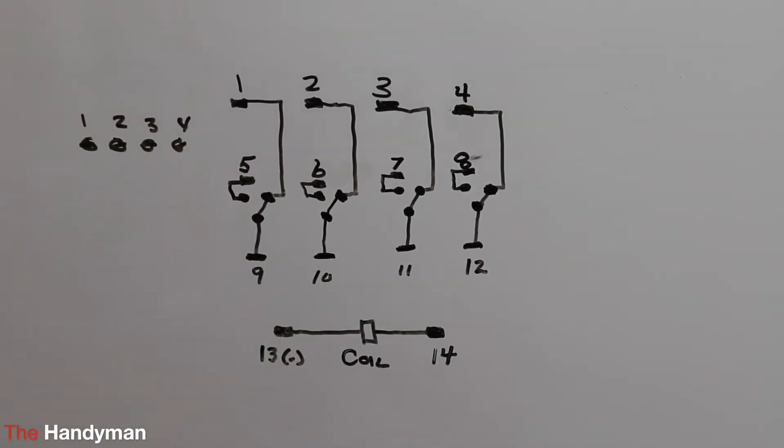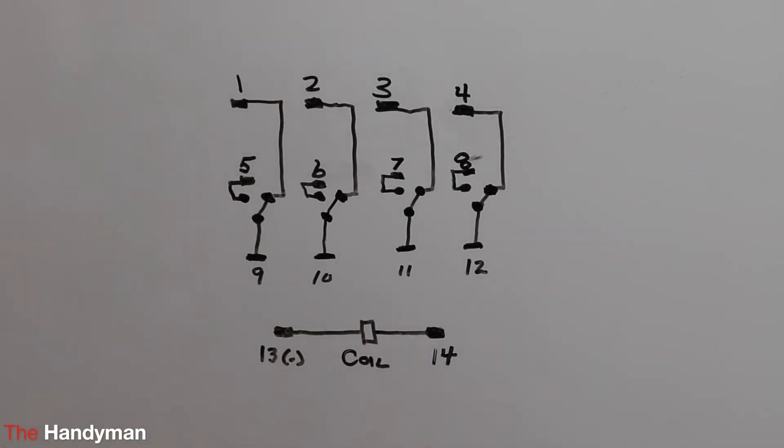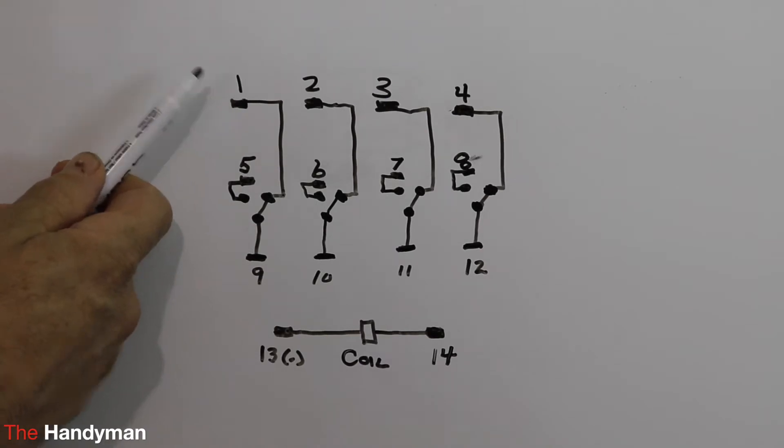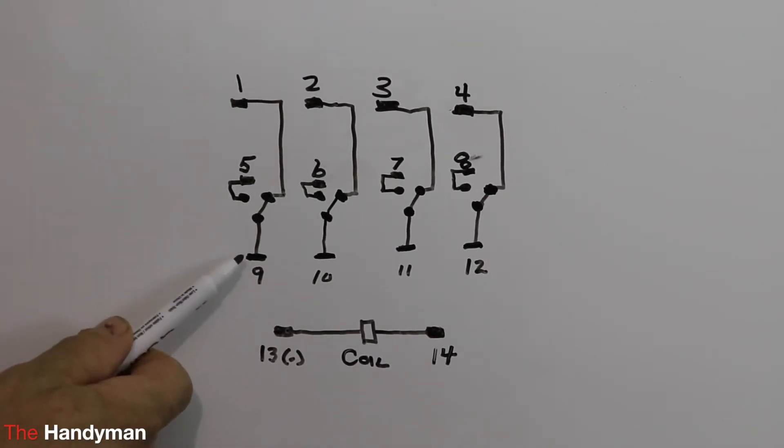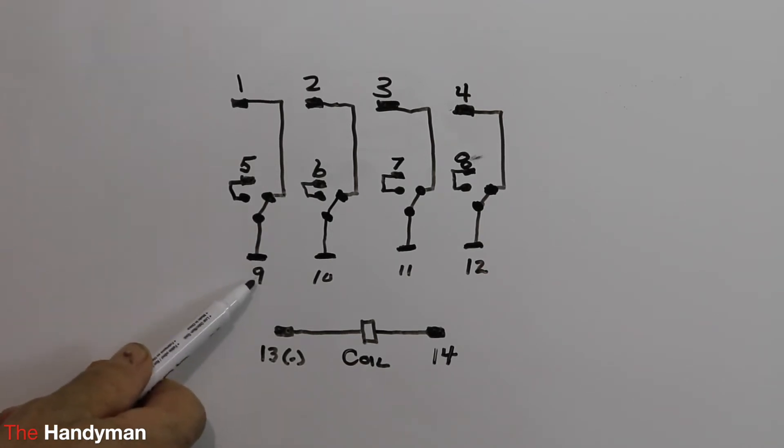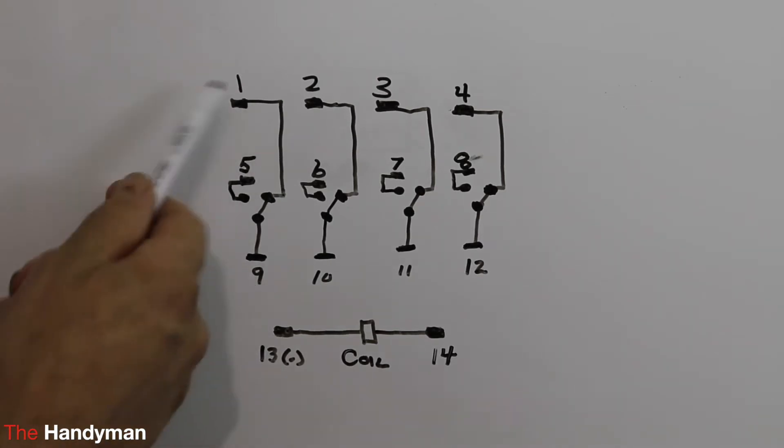So getting back to this, your first set of contacts is screw terminal number one, and to find a normally closed contact, if you follow this down, it shows your contact points here, and the line is drawn on this side of the one, which is normally closed, which comes down to screw terminal point number nine.